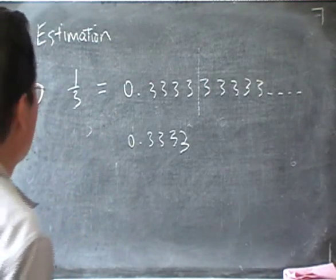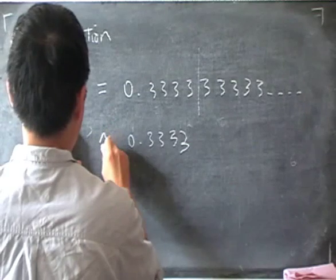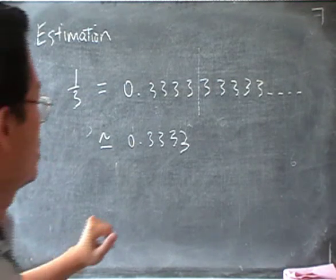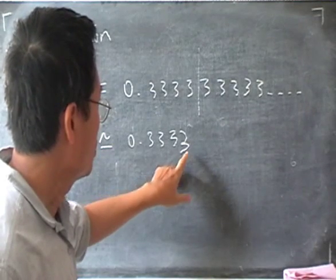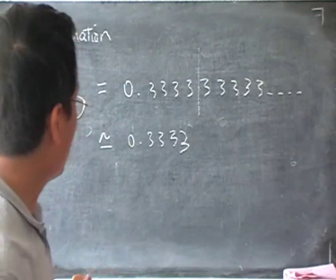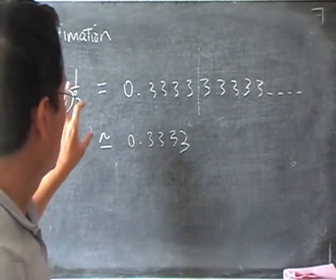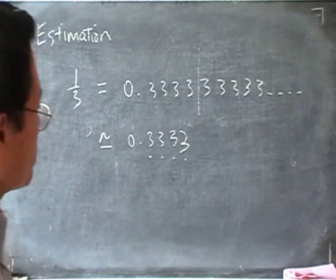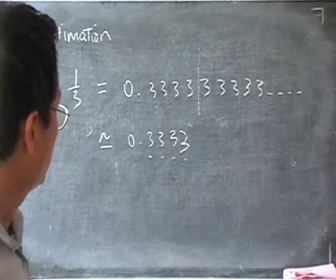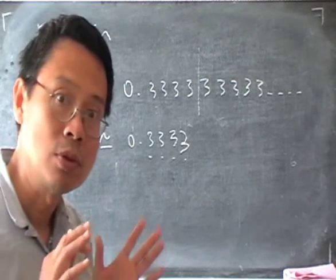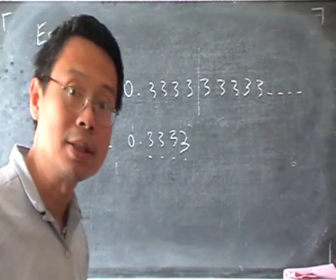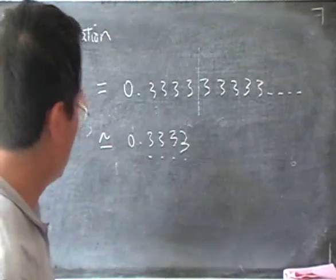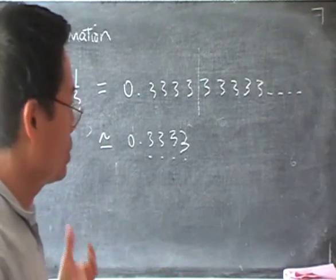So if I write it this way, I write an approximate sign here to say that it's not exactly the same. There are different ways to describe what I'm doing here. I can say that I've rounded off this decimal number, or one-third, to one, two, three, four decimal places. So that's what we're talking about when we say estimation in this case — we are using 0.3333 as an estimate of the real number which is one-third. It's not the exact number but it's a kind of estimate.